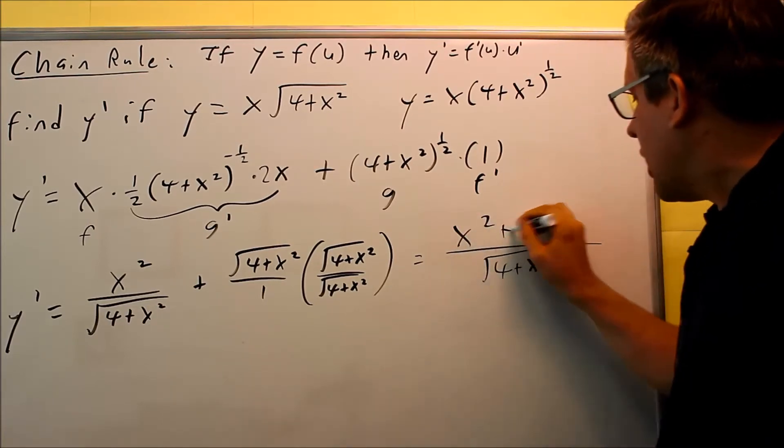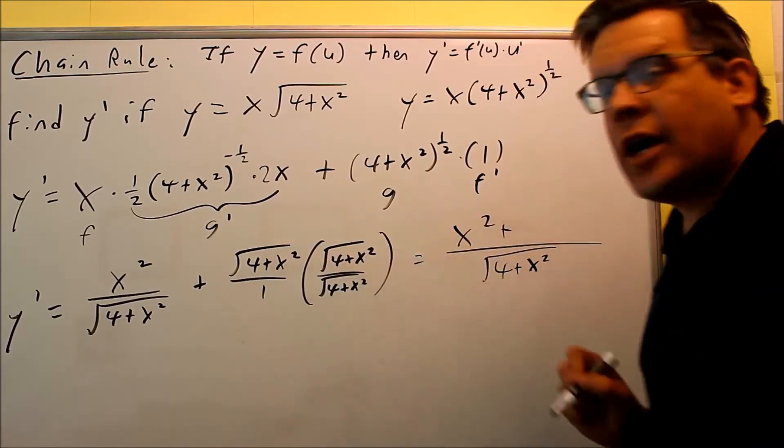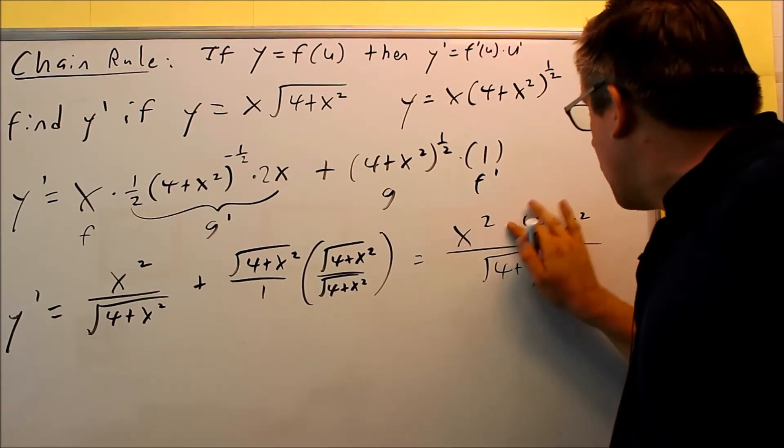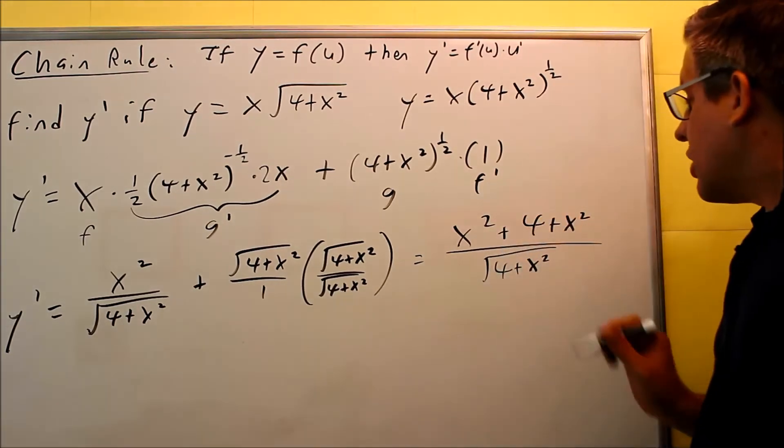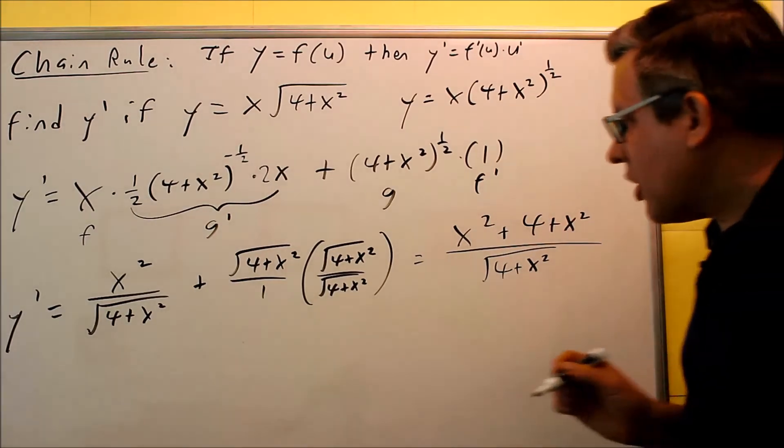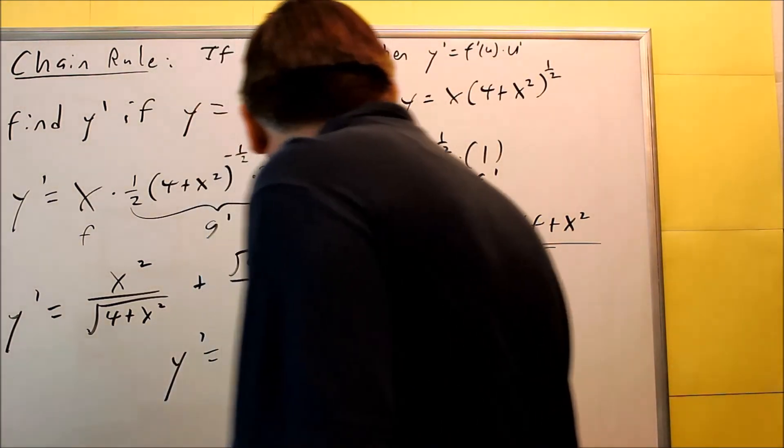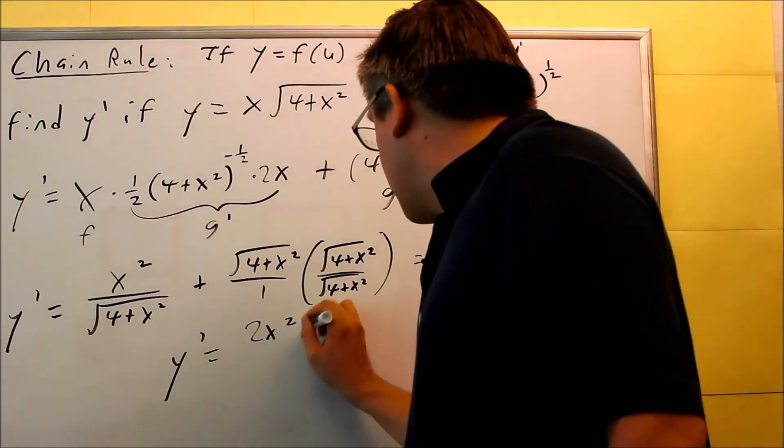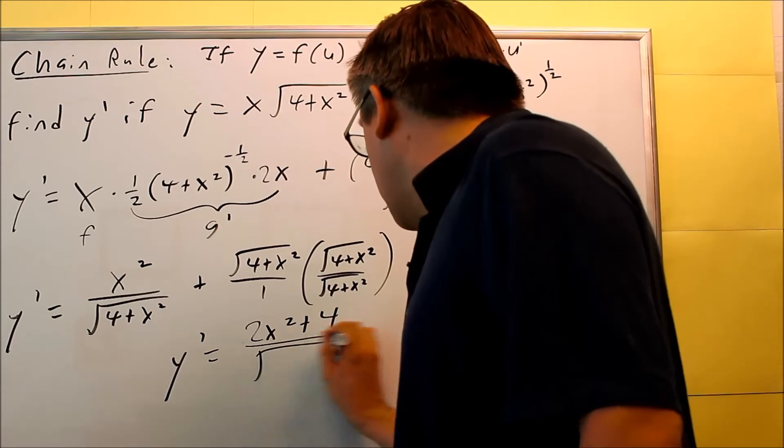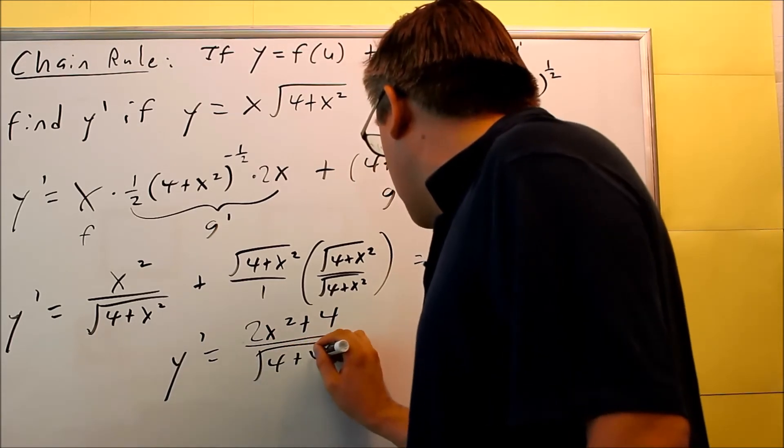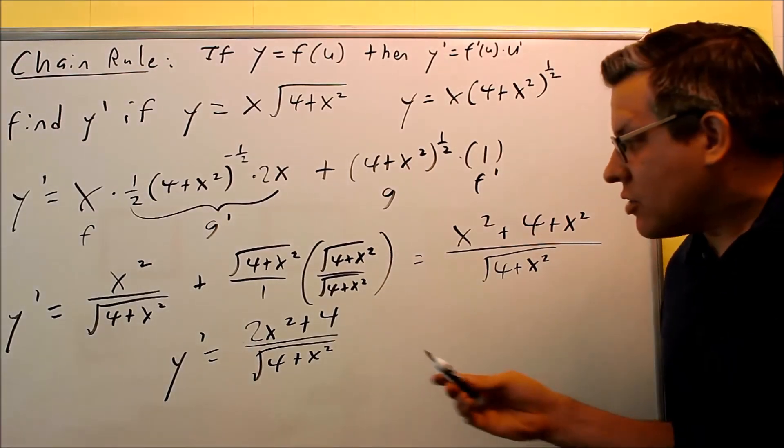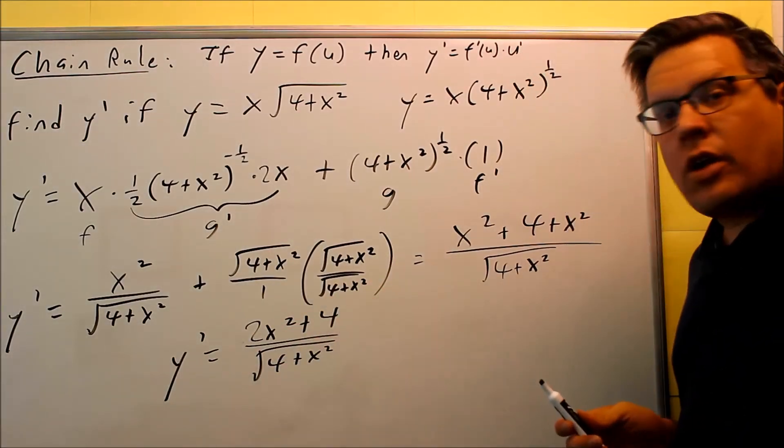And then the last thing you need to do is you're just going to add like terms together. So here's my final answer. My y' can be written this way. Like terms, 2x² + 4, all that over the square root of 4 + x². And that would be as far as you could take it as your answer. That would be written as a single fraction.